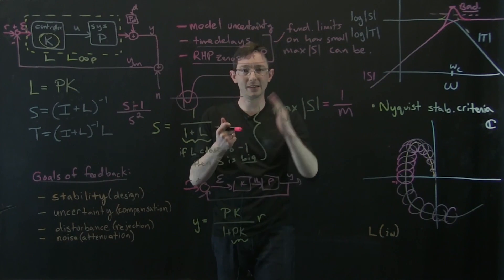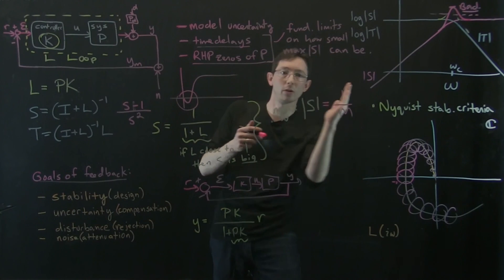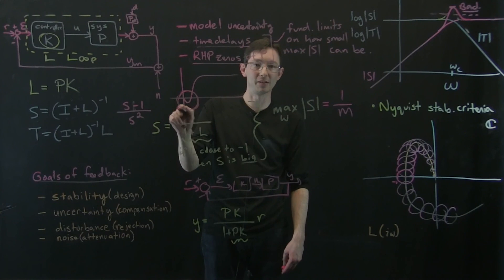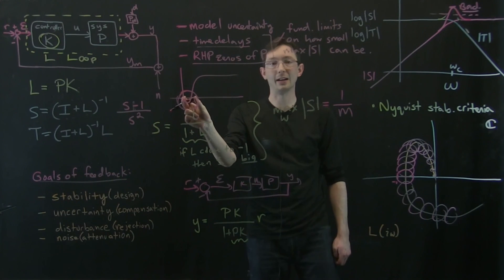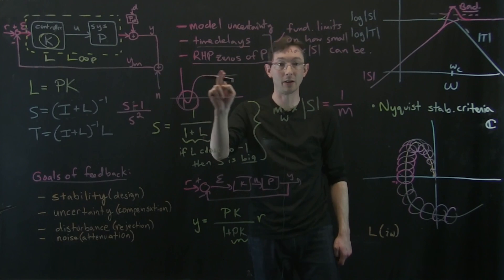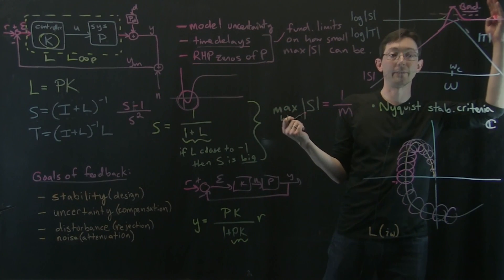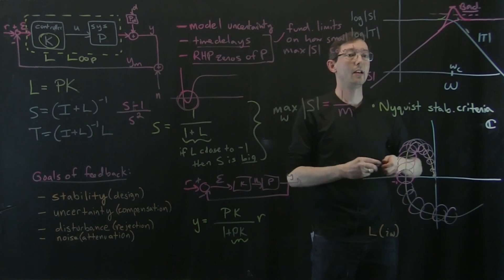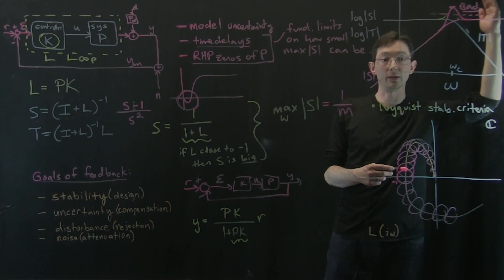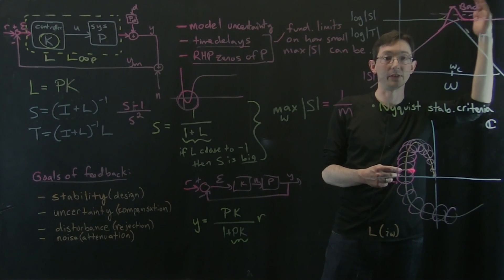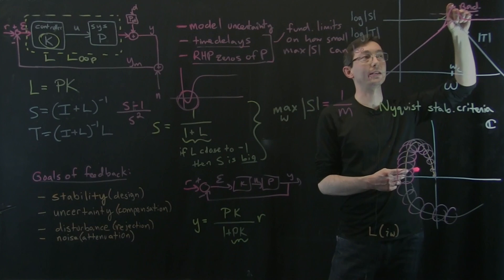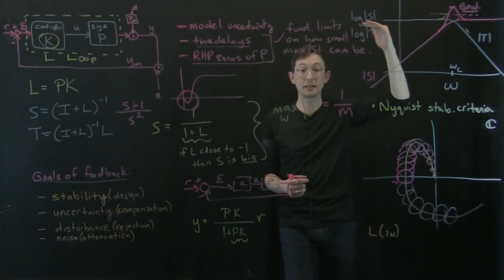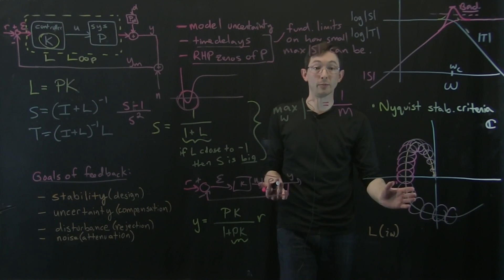If you think about it, a system that has to go in the wrong direction before going in the right direction acts almost like a time delay. And if I have a one second delay before I can go in the right direction, there's no way I can track something at 500 Hz. Time delays and right half plane zeros put fundamental limitations on how high a frequency of disturbance or reference you can reject or track, and also put a fundamental limit on how far you can drive the peak of the sensitivity down. High peaks in sensitivity are bad — they make you fundamentally non-robust.